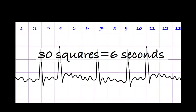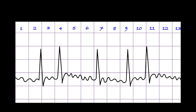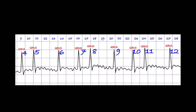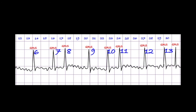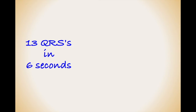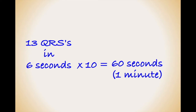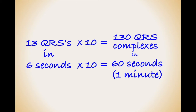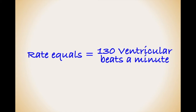I now want to count the number of times the heart beats within this 30 square, six second interval. As each QRS complex represents a contraction of the ventricles, counting the number of QRS complexes will allow me to calculate the ventricular rate. There are 13 QRS complexes within our 30 squares. If we times 13 by 10 we get our ventricular rate for the minute. In this ECG, the ventricles are contracting approximately 130 times per minute.